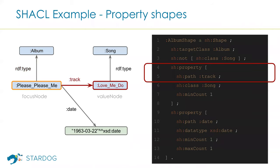Moving to the next line, we see a property shape linked to the album shape via sh:property, pointing to what is called a property shape, again using a blank node. Property shapes change the value node in the validation process by specifying a path from the current focus node to a new value node. Here the path is defined to be the track property. So now our value node will be the La Me Do node, which is connected to our focus node Please Please Me, and all the constraints defined in the property shape will be applied to the La Me Do node.